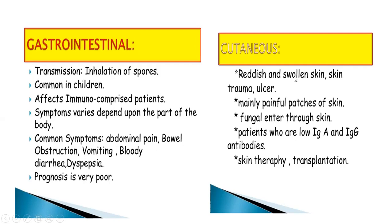In cutaneous mucormycosis, the infected skin appears reddish and swollen, with very painful patches. This cutaneous form generally occurs due to low antibody levels such as IgG and IgM in the body. Treatment involves skin therapy or transplantation of the infected skin with normal skin where infection has occurred. This concludes the discussion on the four general fungal contaminants — Aspergillus, Neurospora, Rhizopus, and Mucor — which mainly cause contamination in cultured food material or in the food industry.